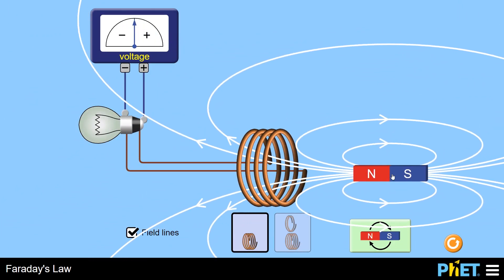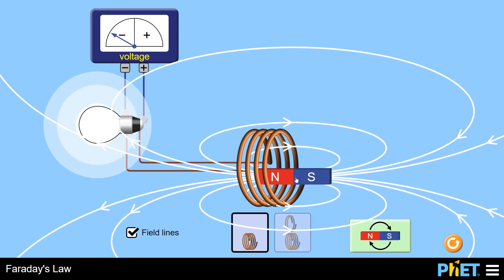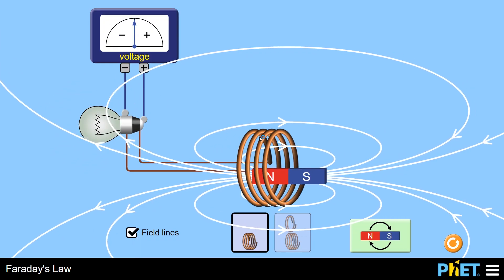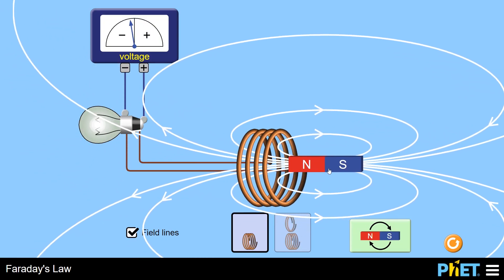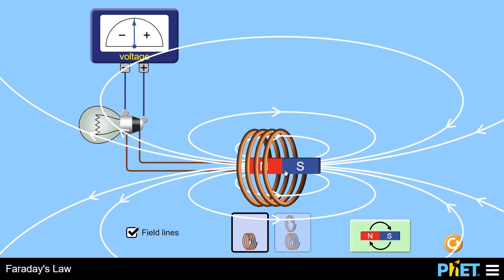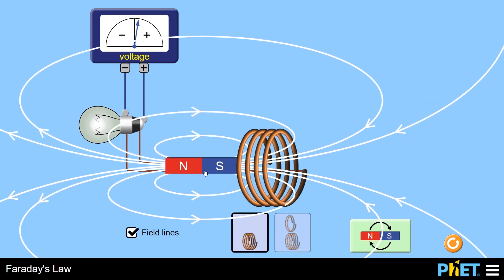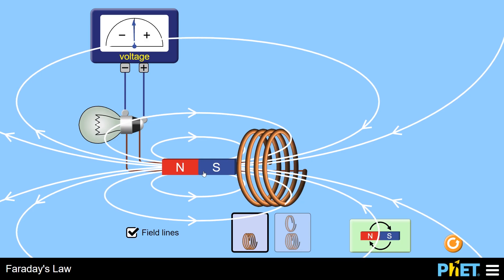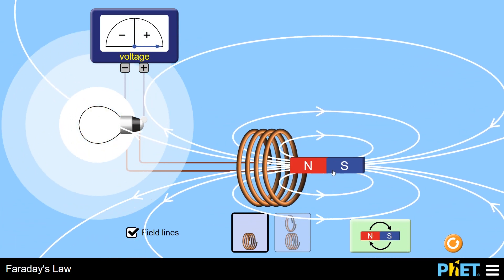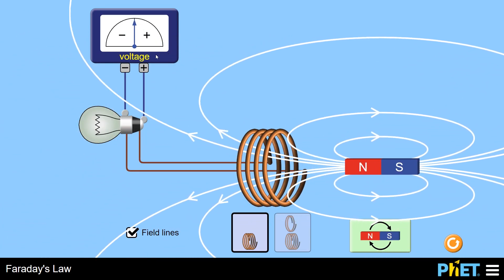Notice as well that when the north pole of the magnet goes through the coil, the voltage goes one way. And when the south pole moves through, the voltage goes the other way. And if I change the direction that I move the magnet through, then that will also swap the direction of the voltage.